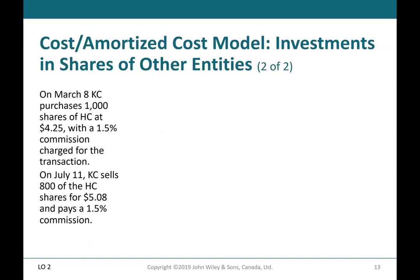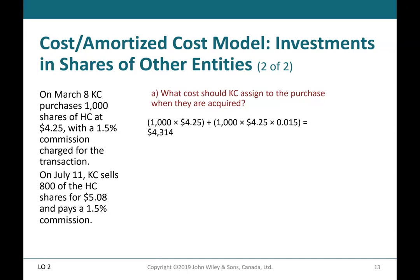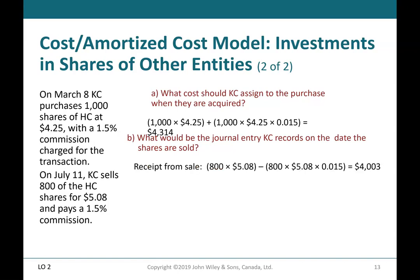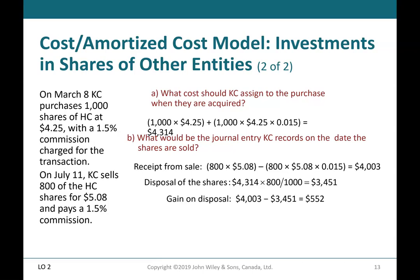Cost/amortized cost model — investment in shares of other entities, Part 2 of 2. On March 8th, Casey purchases 1,000 shares of HC at $4.25 with a 1.5% commission. On July 11th, Casey sells 800 of the HC shares for $5.08 and pays a 1.5% commission. The cost assigned to the purchase is $4,314. The journal entry on the date the shares are sold: receipt from sale $4,003; disposal of shares $3,451; gain on disposal $552. Journal entry: debit cash $4,003; credit other investments $3,451; credit gain on disposal of investments — cost/amortized cost — $552.